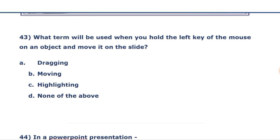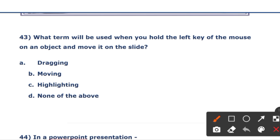The next question: what term is used when you hold the left mouse button on an object and move it on the slide? The right answer is option A — this action is called dragging.